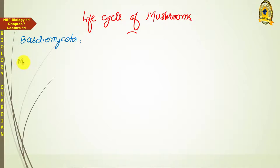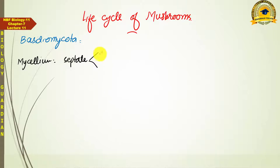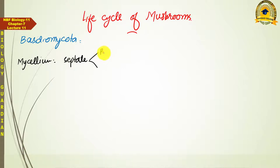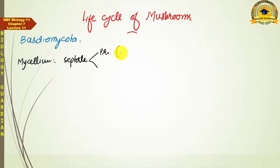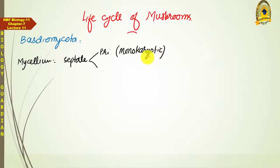The mycelium is septate, and this septate mycelium exists in two different forms. When monokaryotic hyphae are present in the mycelium, it is called primary mycelium — primary mycelium which consists of monokaryotic hyphae, meaning hyphae with a single nucleus.